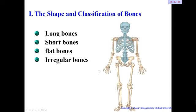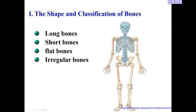Now let's see the shape and classification of bones. The first type is the long bone. There are many long bones in our body — for example, the humerus and femur are long bones. You can see they are long. But some bones that appear short still belong to the long bone category — for example, all the bones of the fingers. They are short in size but still classified as long bones.